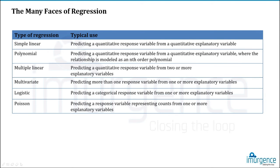Simple linear regression involves predicting a quantitative response variable from a qualitative or quantitative explanatory variable. The independent variable can be quantitative as well as qualitative, but the dependent variable is restricted to be a numerical variable only. Polynomial regression is used when your data doesn't follow linearity and its shape changes over time.